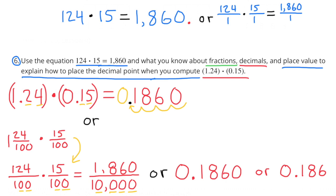Number 6. Use the equation 124 times 15 equals 1,860 and what you know about fractions, decimals, and place value to explain how to place the decimal point when you compute 1 and 24 hundredths times 15 hundredths. I noticed that they're using the same digits — it's the location of the decimal point that's different. 124 times 15 equals 1,860 and 1 and 24 hundredths times 15 hundredths equals 1,860 ten-thousandths. Since 1 and 24 hundredths is 100 times smaller than 124, and 15 hundredths is 100 times smaller than 15, 100 times 100 equals 10,000. So the answer is going to have the decimal place four places to the left, making it 10,000 times smaller than 1,860.